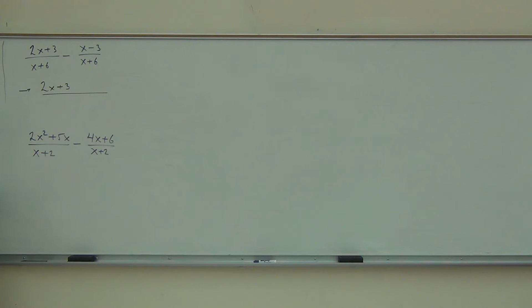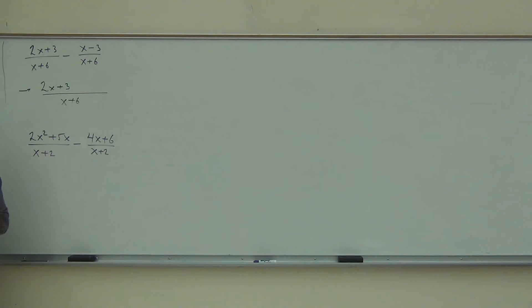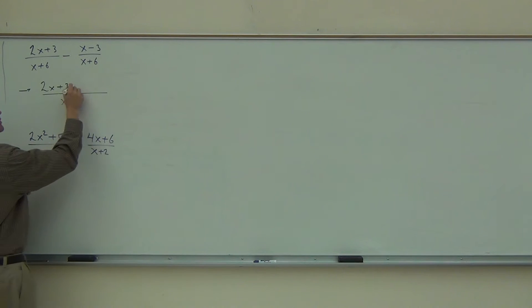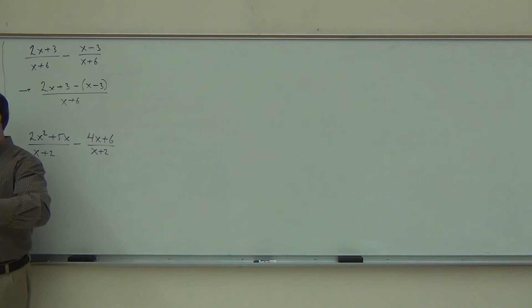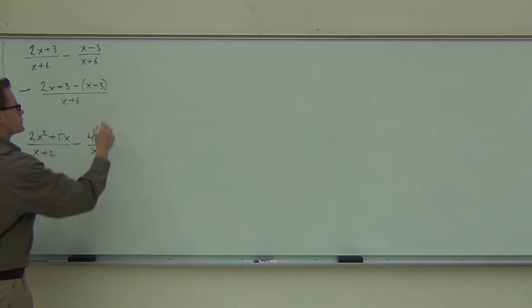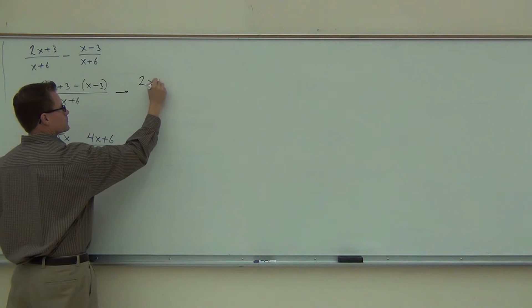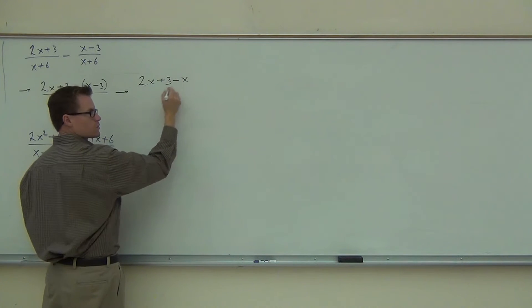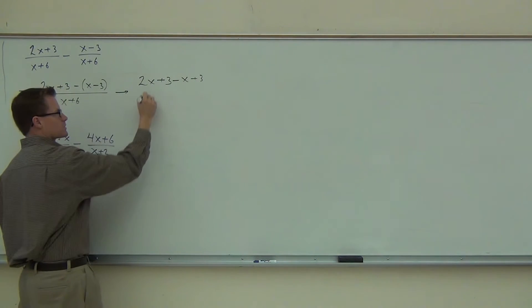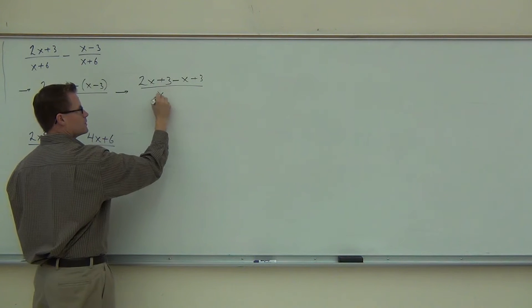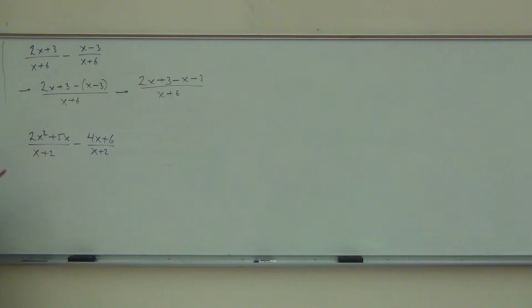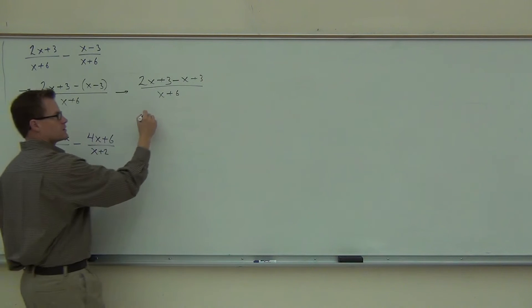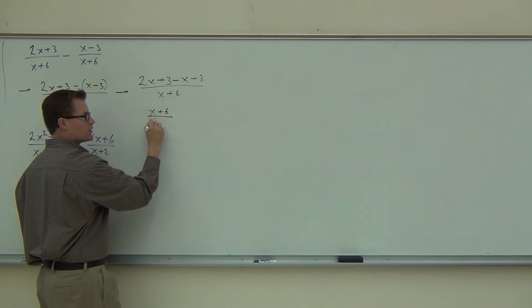Here of course we have one that's going to stay the same: x plus 6. Did you do this on your paper? Did you get that? Did you change the second sign? Awesome. So we're going to get minus x plus 3 over x plus 6. We'll combine some like terms. What we're going to get out of this is x plus 6 over x plus 6.